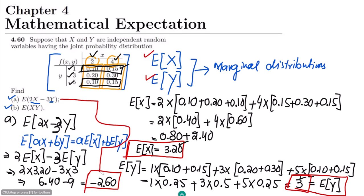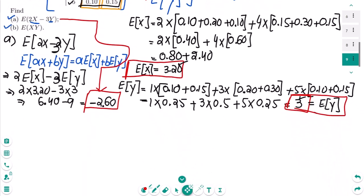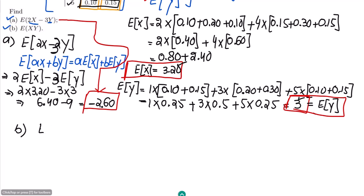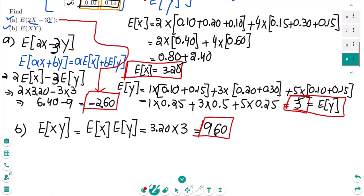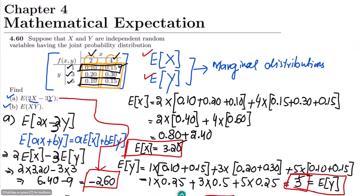For part B, we need E[XY]. Since X and Y are independent, E[XY] equals E[X] multiplied by E[Y]. Substituting the values: 3.20 times 3 = 9.60. That is the solution to part B of our question. That's it for today — we solved question 4.60. If you have any questions, you can ask in the comment box.